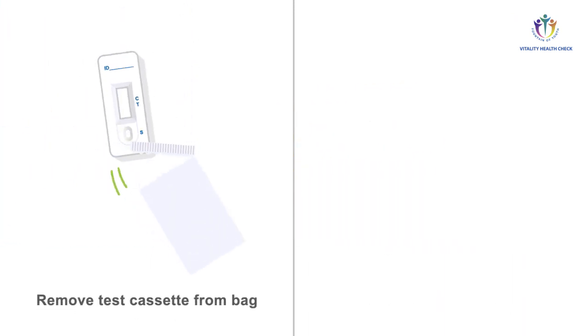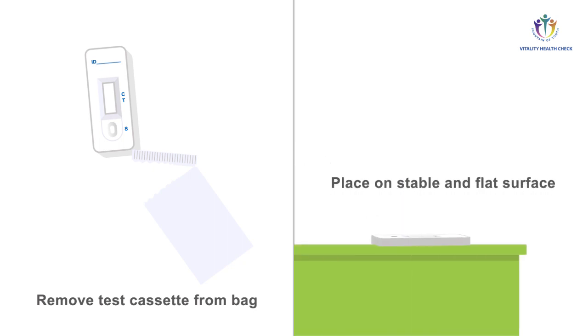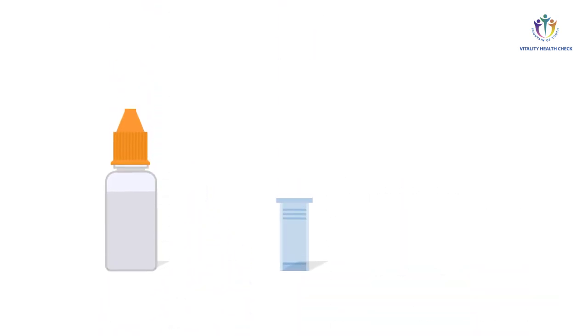Remove a test cassette from the sealed bag and place it on a stable surface. Next, prepare one uni-sampler device for sampling. Open the sample buffer bottle and check that its outlet is bladder-free.